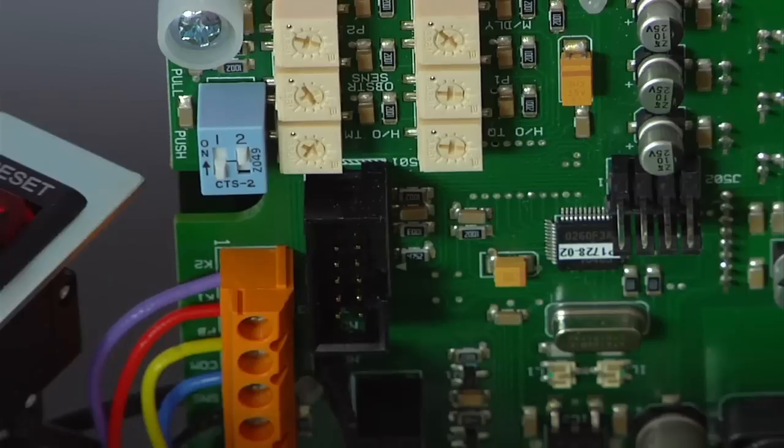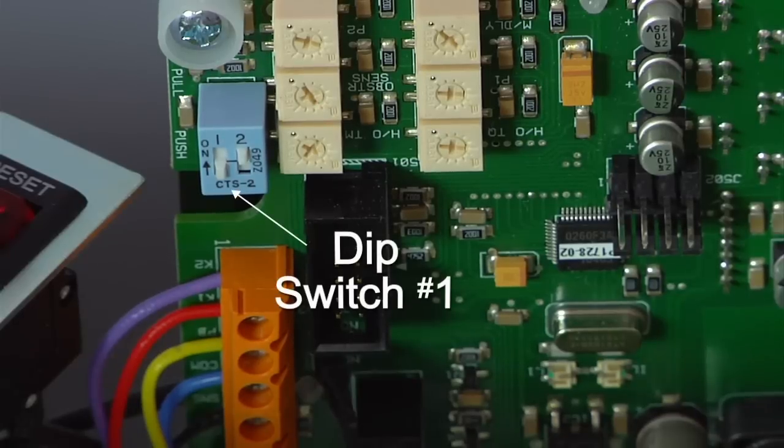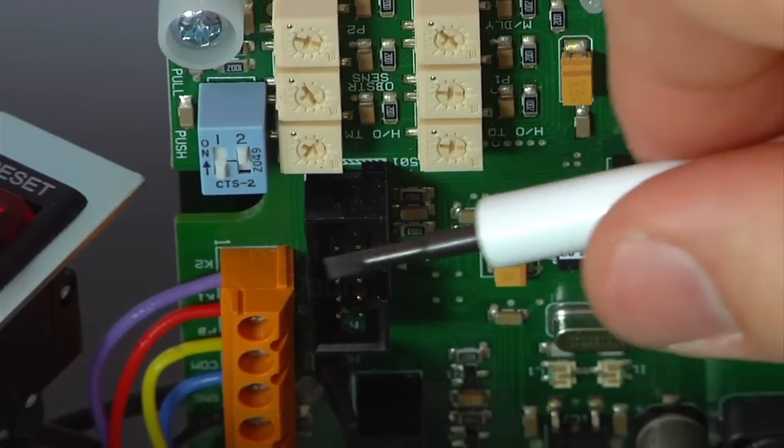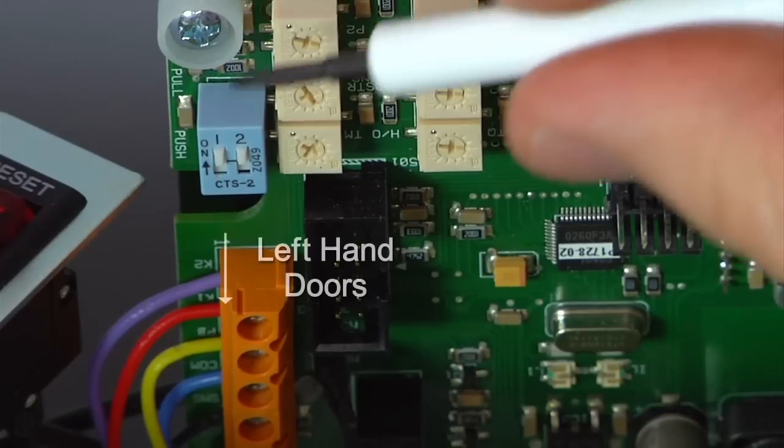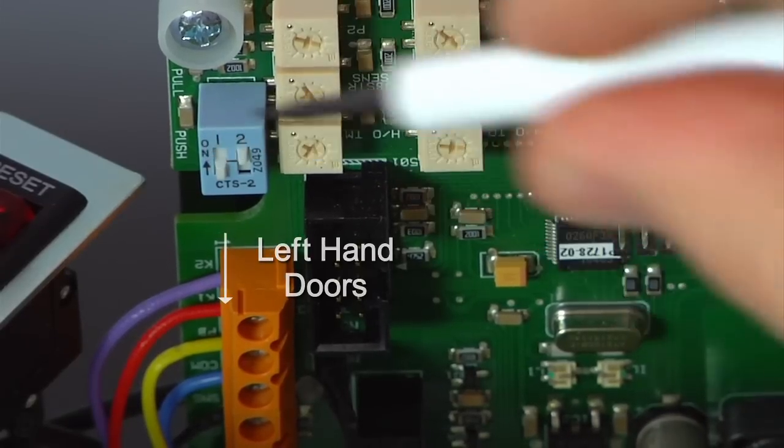Dip switch number one on the left is used to set the hand of the door. Move it up to the on position for right-hand doors and down to the off position for left-hand. Our door is left-handed, so this switch will be off.